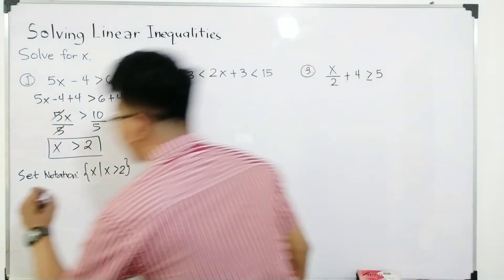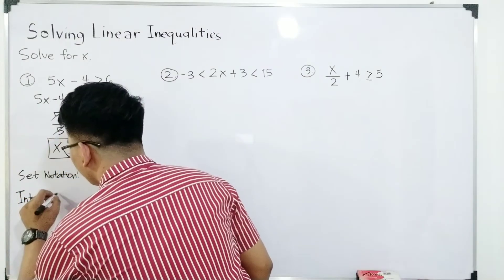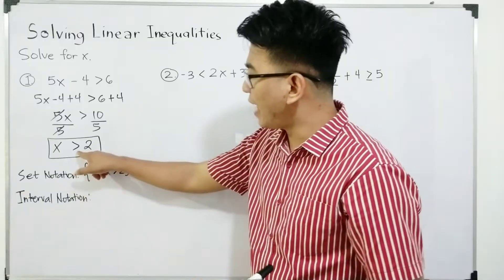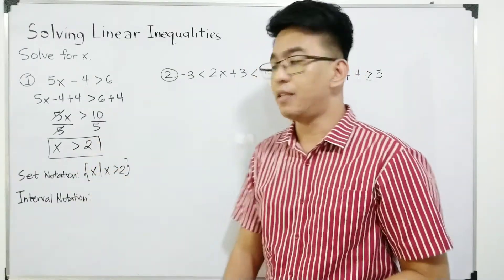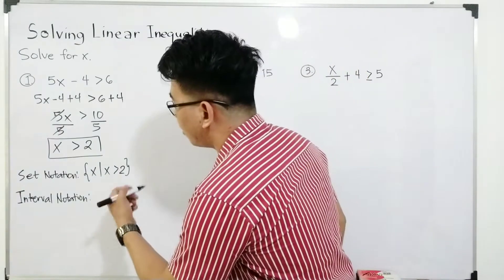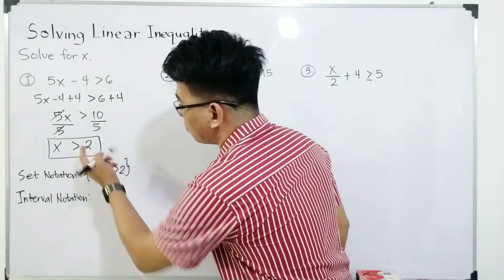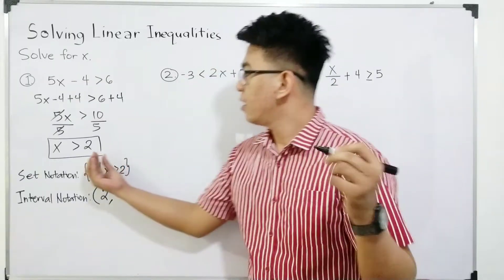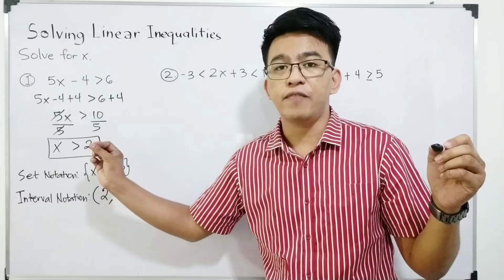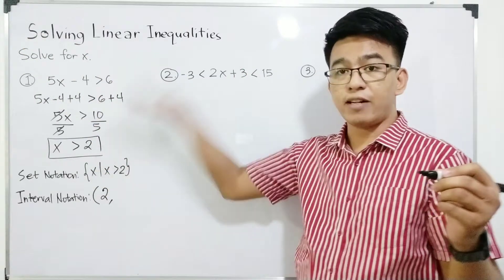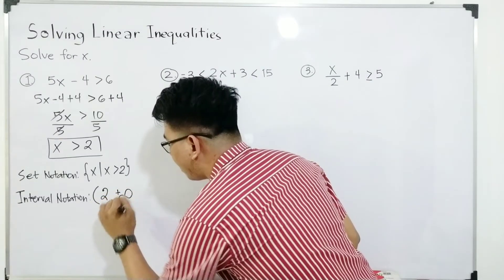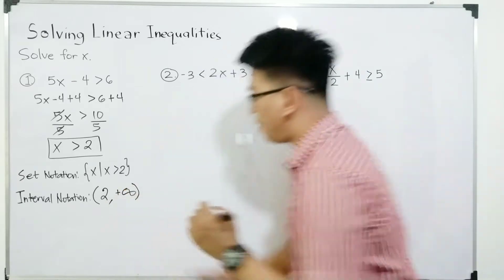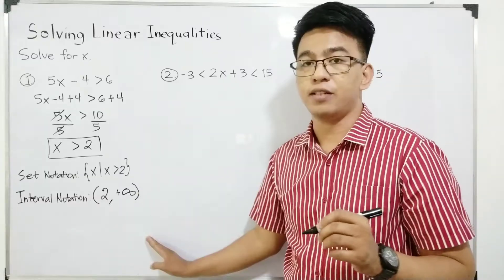How about the interval notation? For interval notation, we use parentheses or brackets. When the inequality is strictly greater than or less than — with no bar under the symbol — we use parentheses. Our critical point here is 2. Since 2 is not included in our solution, we use a parenthesis. The possible values of x go from 2 to positive infinity, so we write open parenthesis 2, comma, positive infinity, and then a parenthesis. In textbooks they sometimes just write infinity without the positive sign, as it is understood to be positive.